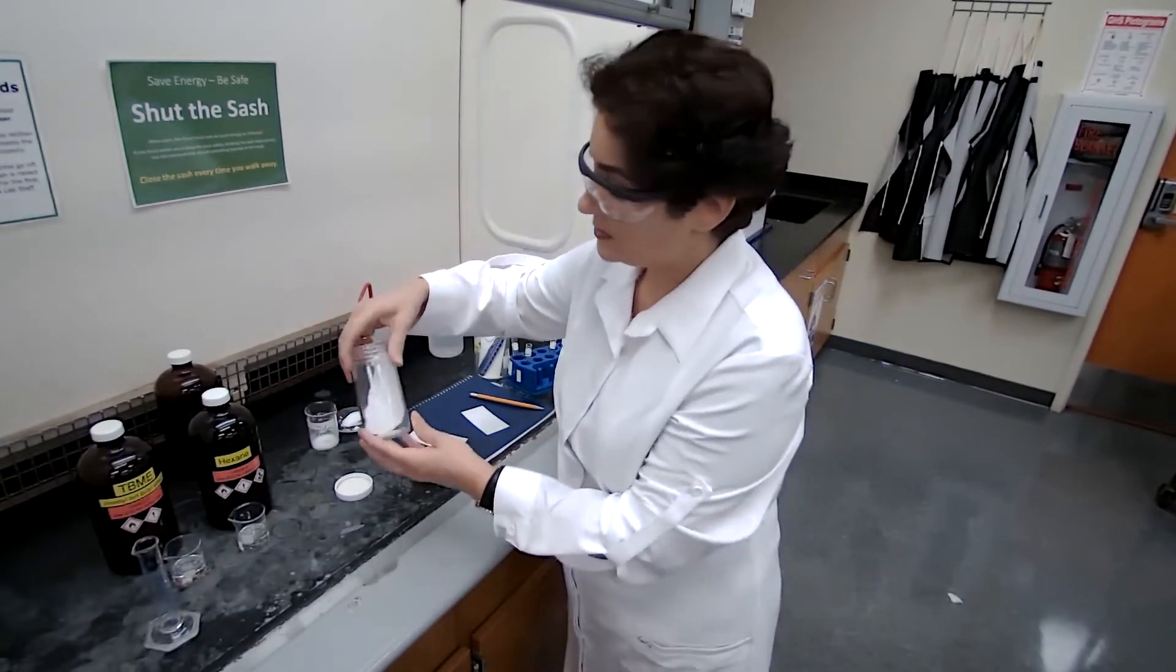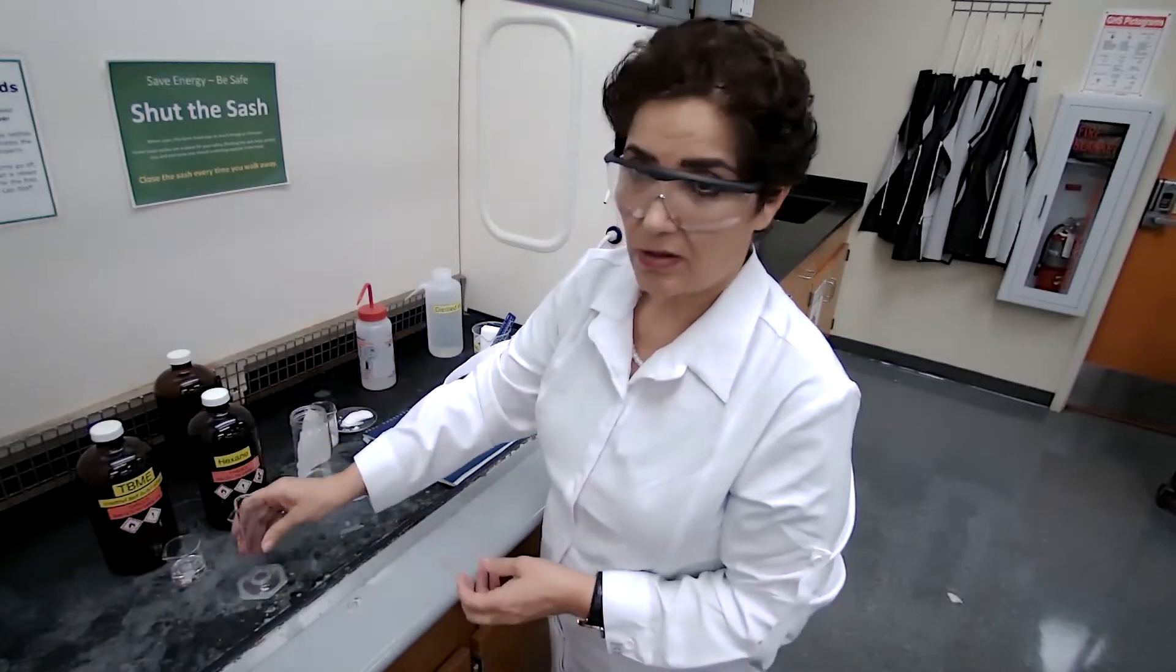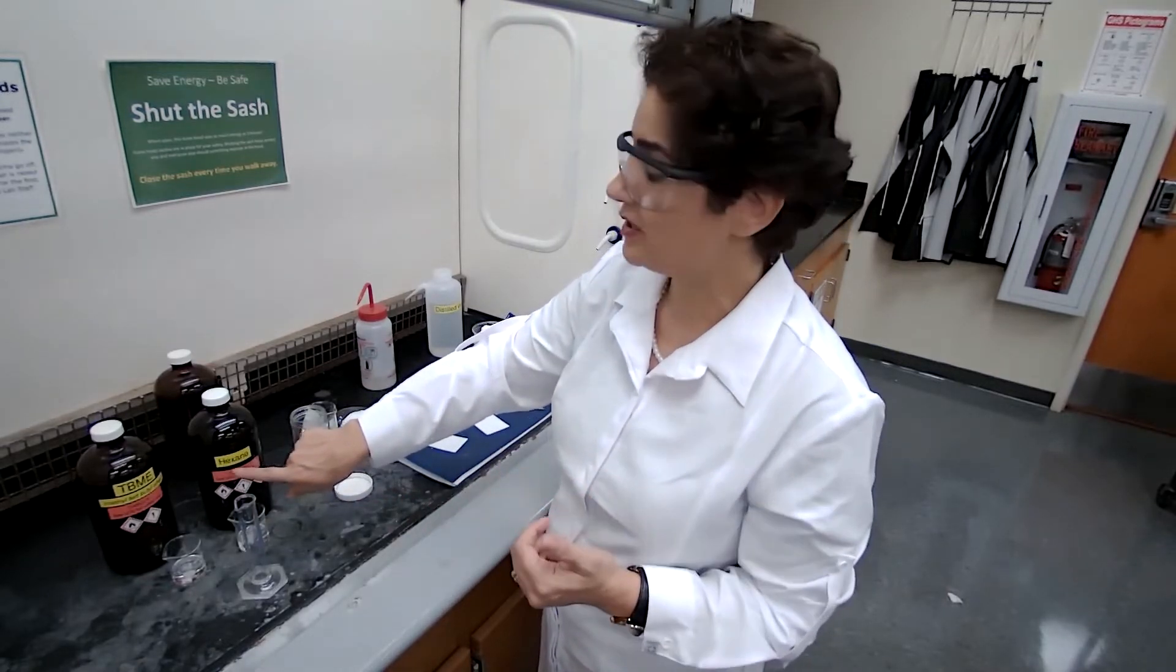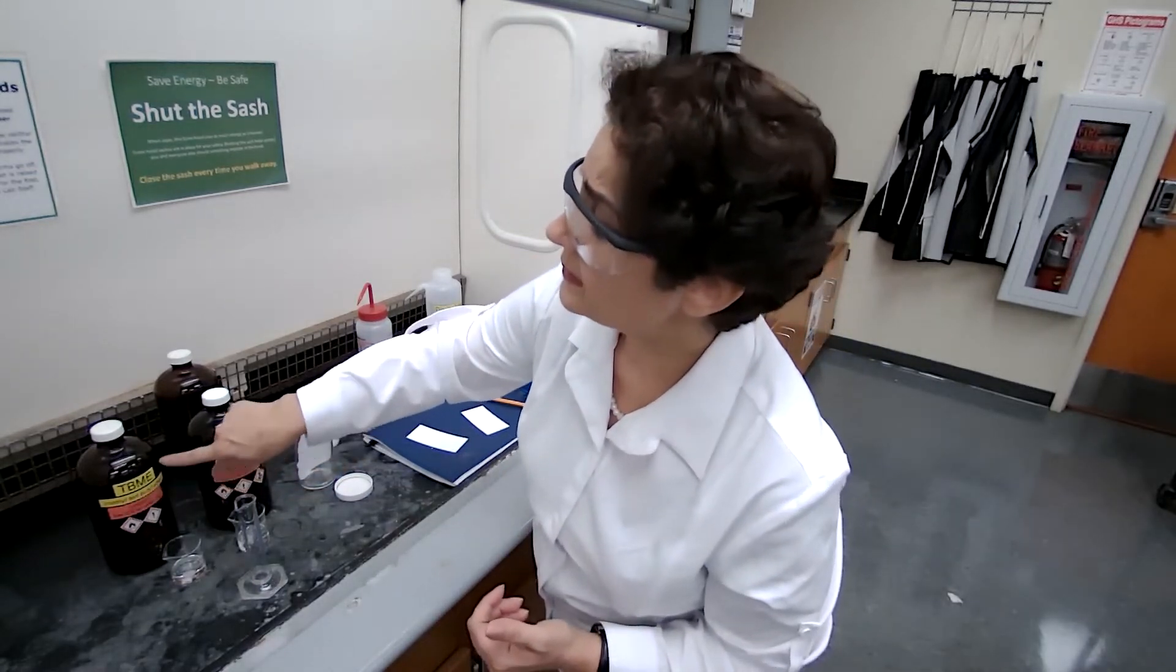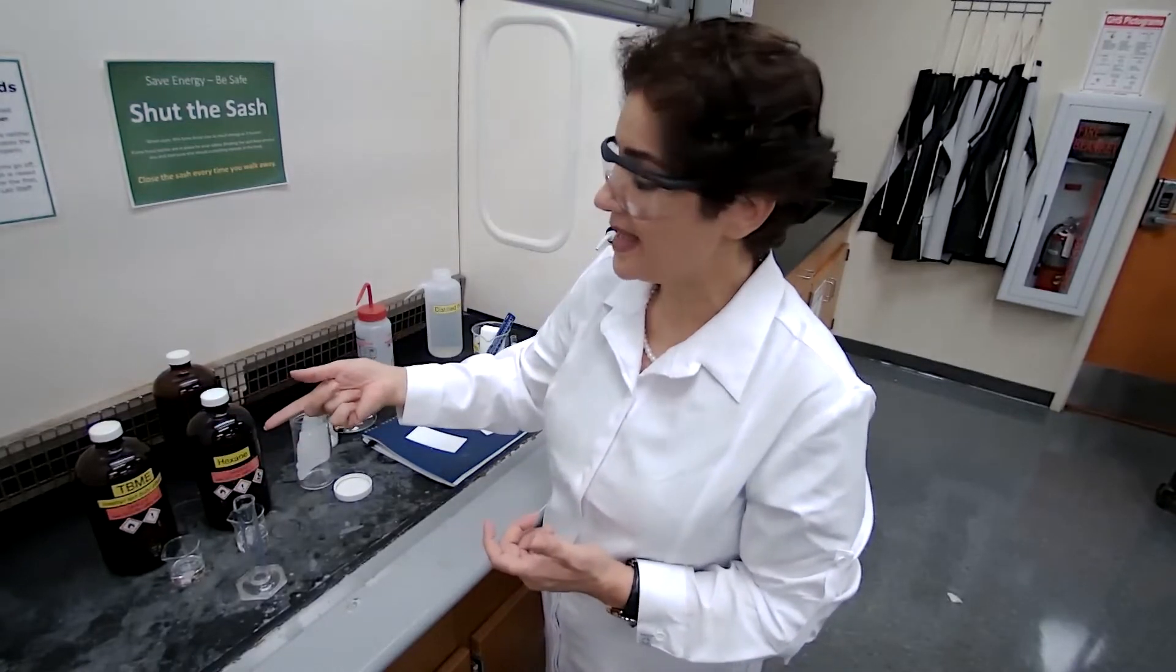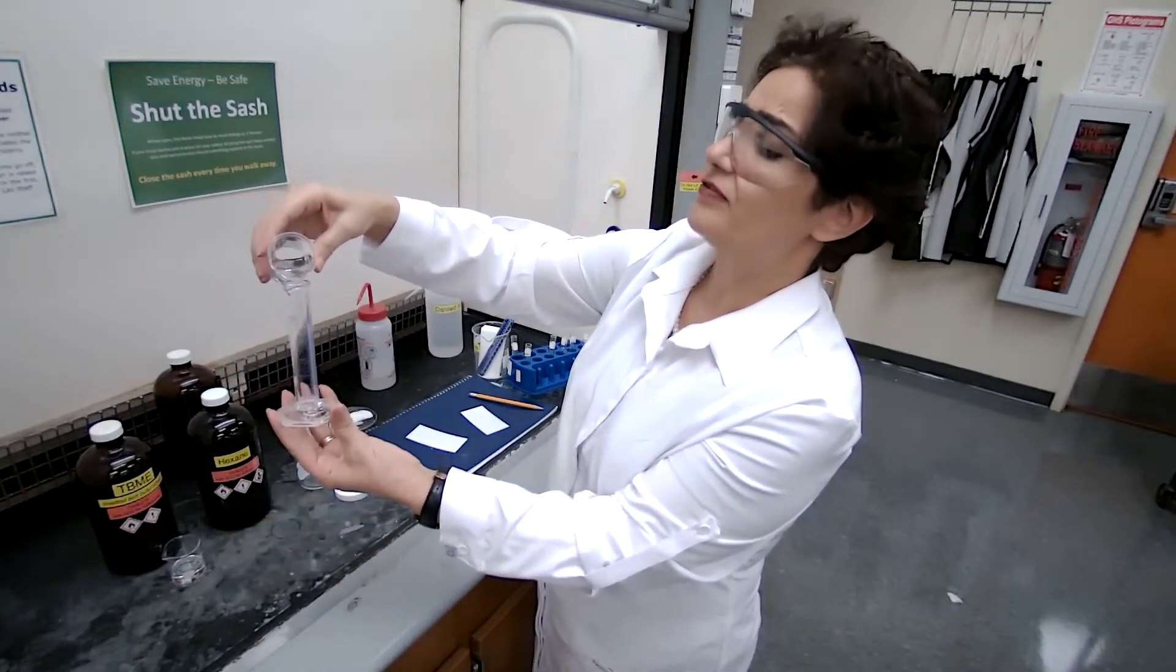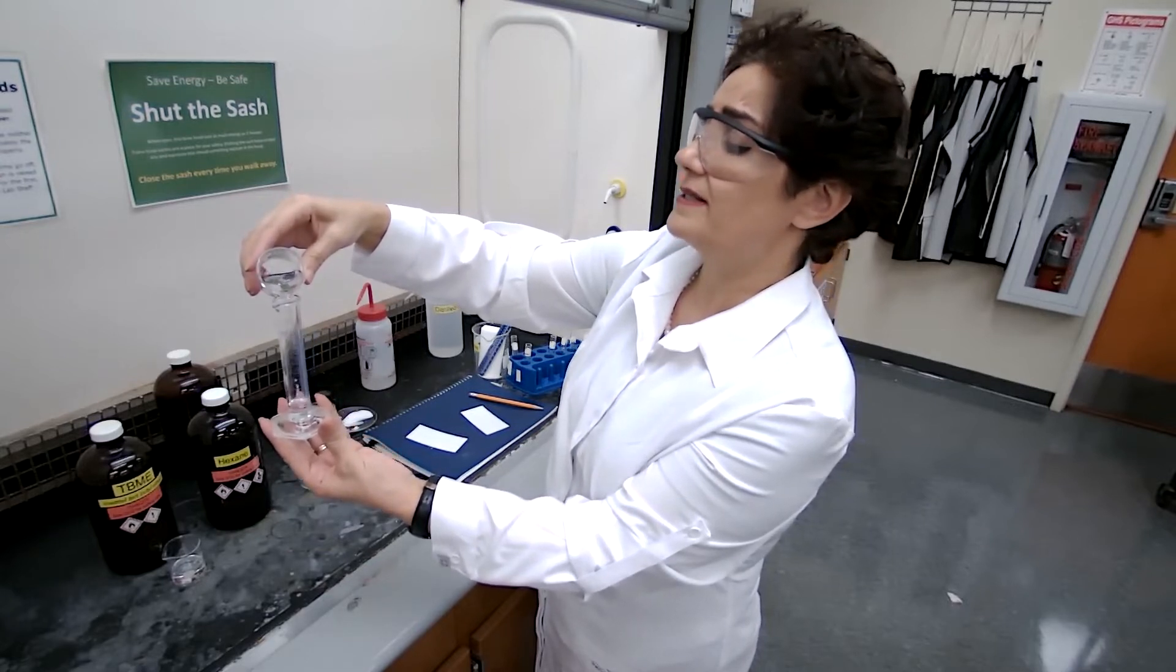And the solvent or mobile phase in this part is a mixture, 50-50% mixture of hexane and t-butyl methyl ether. TBME is the abbreviation solution for that. We are going to use five milliliters of each. I'm using five milliliters, I'm going to add the five milliliters of the hexane.